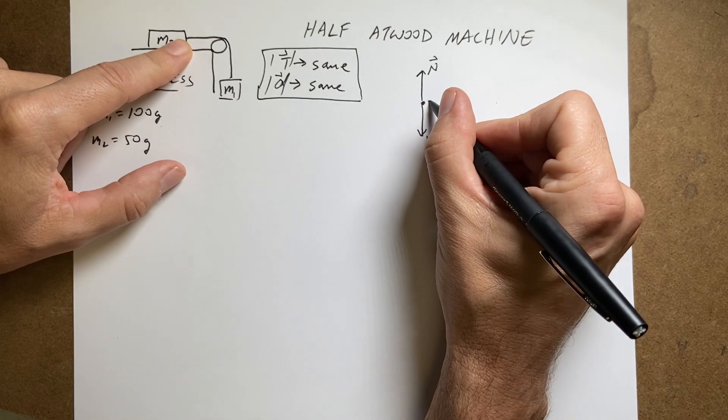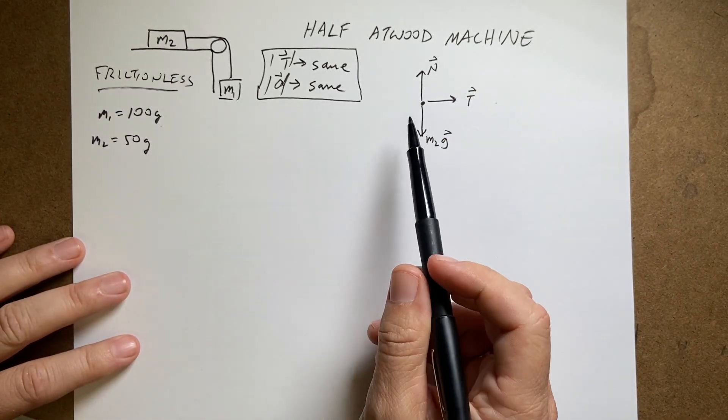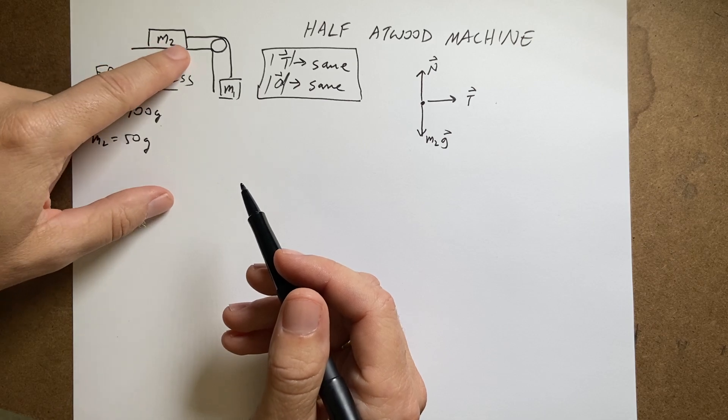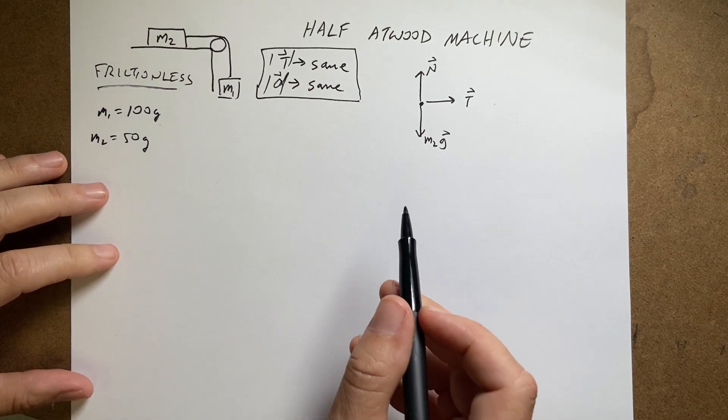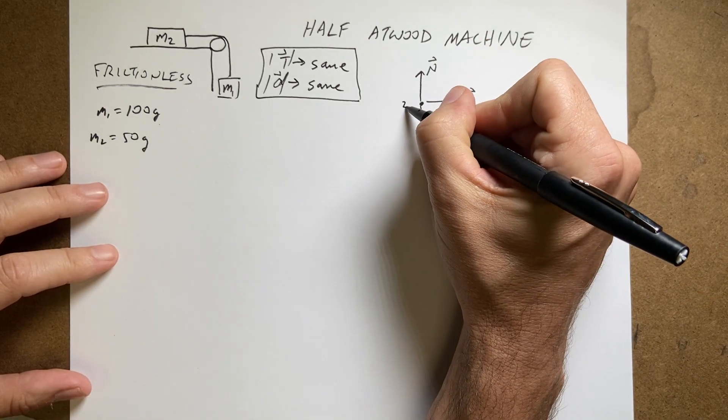So remember when you're drawing these diagrams, you think about what's not touching and what is touching. There's a non-contact gravitational force, but other than that, it has to be things that are touching. So what's touching the mass? Well, the string's touching it and the table's touching it and that's it. So there's my free body diagram for mass two. Let's put that two right there.